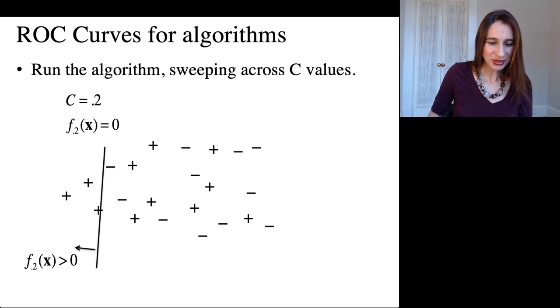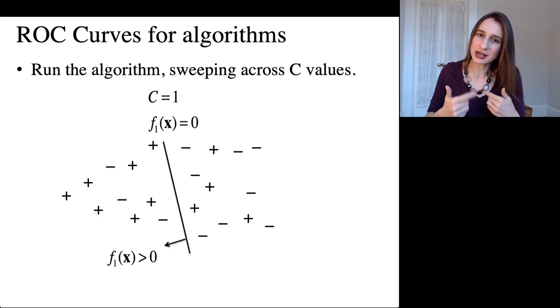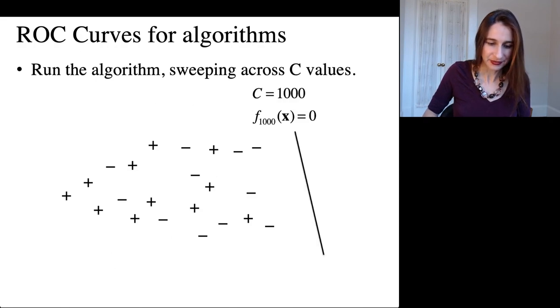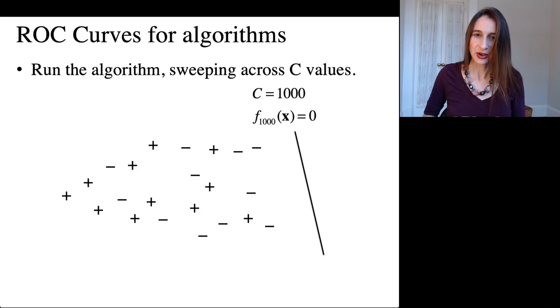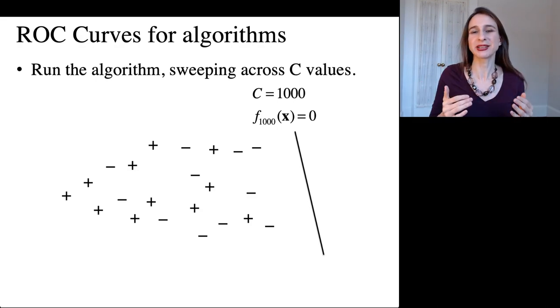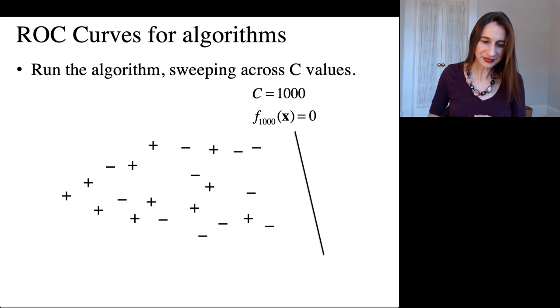So let's keep adjusting it and we'll keep getting different decision boundaries because remember, we're rerunning the algorithm over and over again. And then here we've gotten C all the way to the other extreme where all it cares about is positives and it doesn't care about negatives at all. In that case, you're just voting everything as positive.